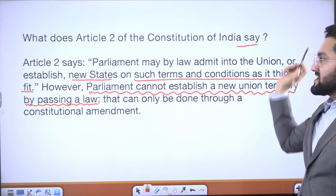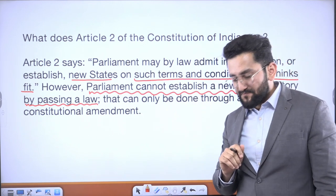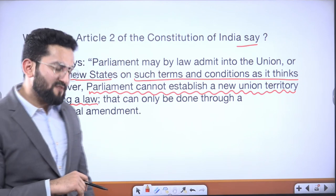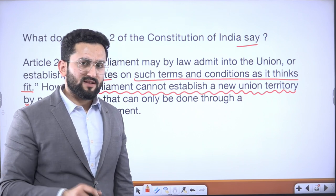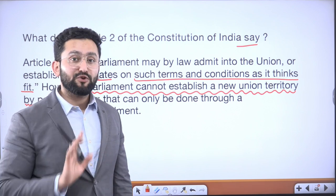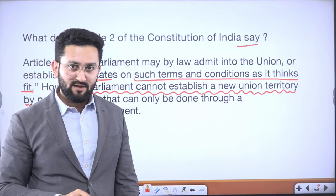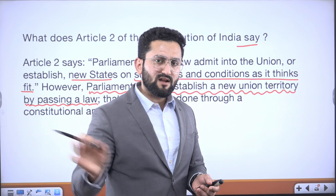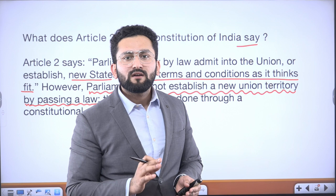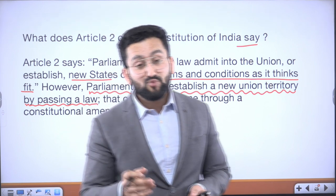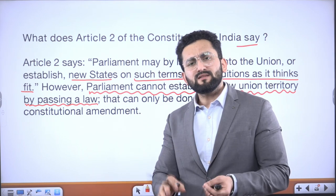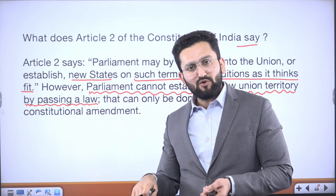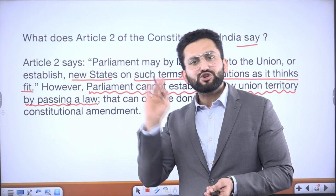What does Article 2 of the Constitution of India say? There was a Constituent Assembly member, Mr. Naziruddin Ahmad, who raised the point that there was a huge overlap between Article 2 and Article 3 and suggested amalgamating them into one article. His argument was not accepted — it was said that since admission and establishment from outside should be in a separate article, and internal alterations of boundaries should be in Article 3, that is standard practice in other constitutions as well. Parliament cannot establish a new Union Territory by passing a law under Article 2, which uses the word 'new state,' not 'union territory.'